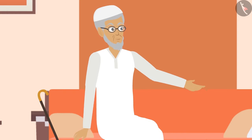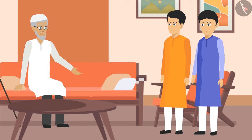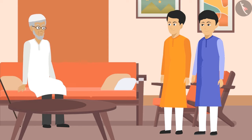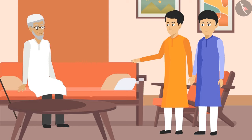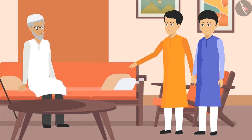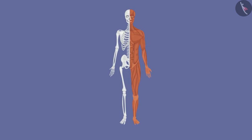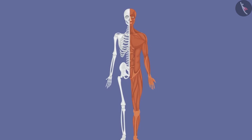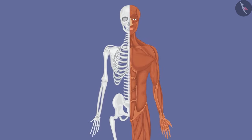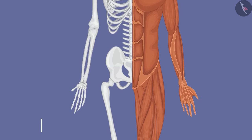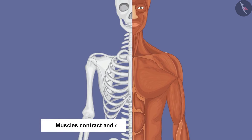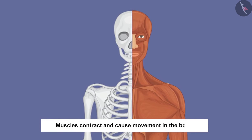'Hmm, right. Now tell me — how do our body parts move?' 'Chacha ji, our body parts use muscles for movement. Most of our muscles are attached to our bones. These muscles contract and cause movement in the bones.'